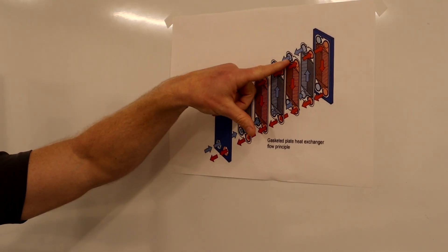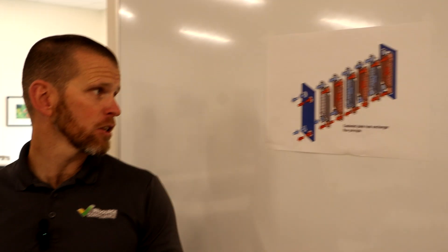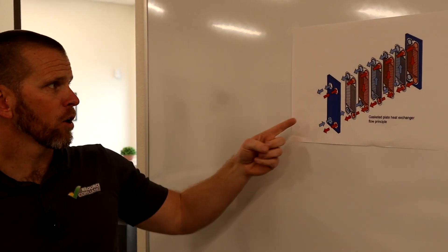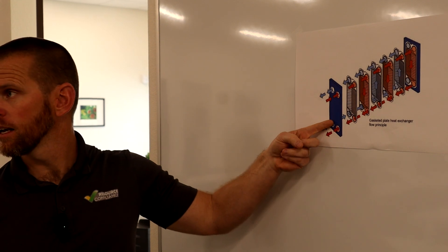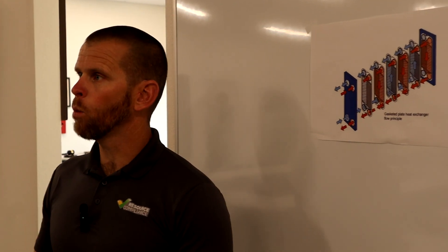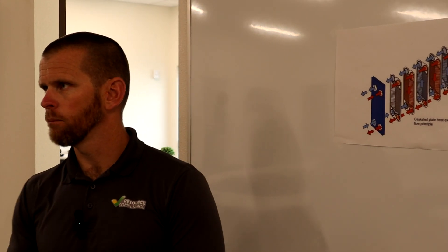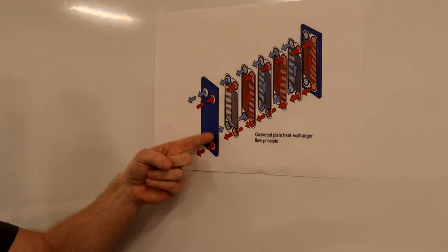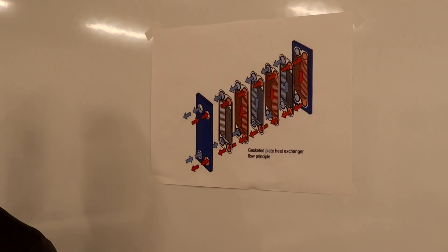Some of it keeps going through and every other plate that is allowed to travel through. Then it's interacting with the cooler fluid, which in the case of a condenser would be water or maybe a glycol solution.